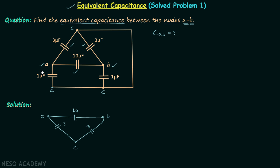Now we will move on to the 1µF capacitors at the bottom. Between A and C we have a 1µF capacitor and between B and C we have another 1µF capacitor. So between A and C we connect 1µF, and between C and B we also connect 1µF. In this way we are done with all 5 capacitors in the network.